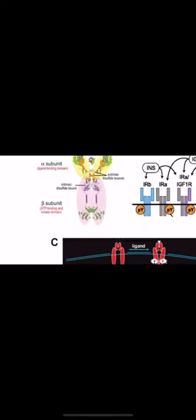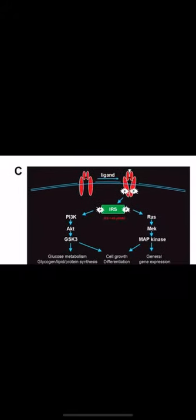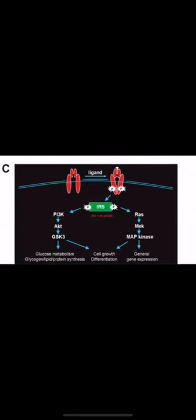The tyrosine kinase activity phosphorylates insulin receptor substrates (IRS), converting them into signaling molecules involved in gene progression, cell growth, differentiation, and glucose metabolism.